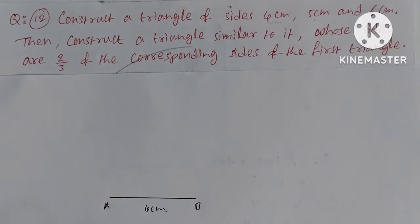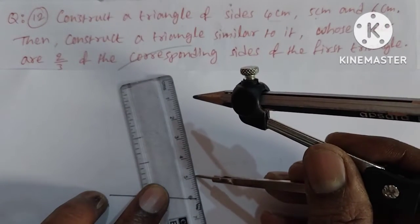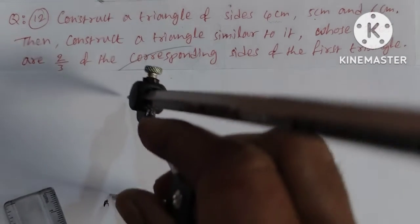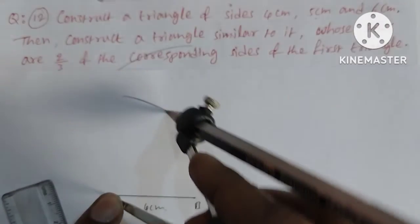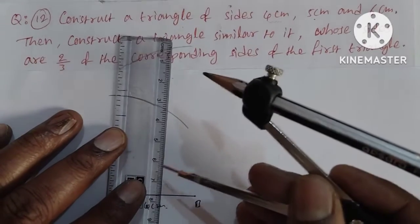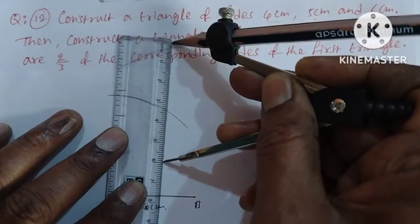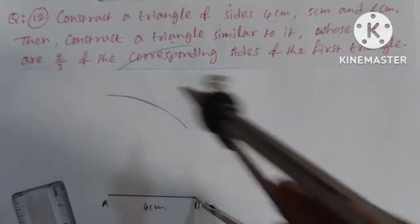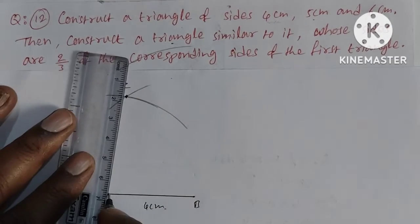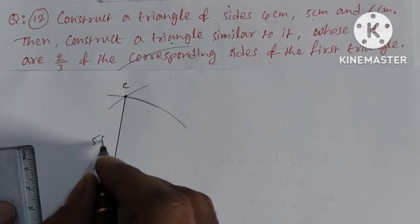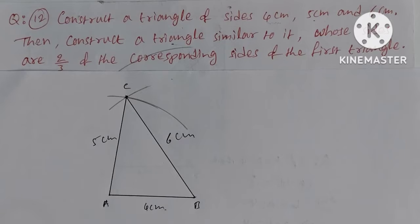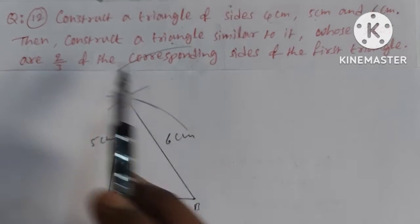Next, we measure 5 cm for side AC. Then we show 6 cm for side BC to the point. Now join AC at 5 centimeters and BC at 6 centimeters. So triangle ABC is complete.